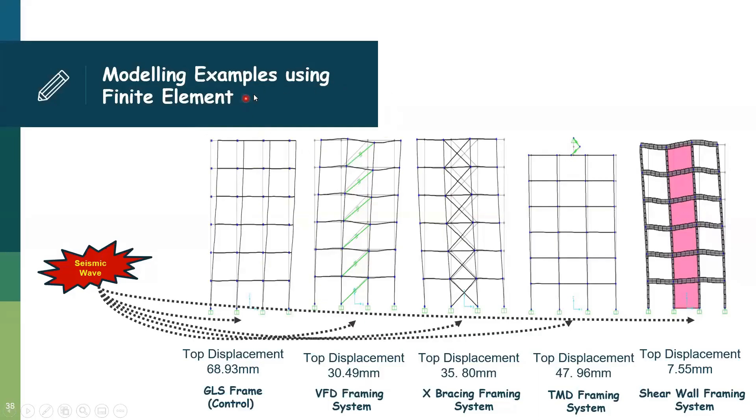Here's some modeling examples using finite element. We have the earthquake movement. We have the RC frame without any innovations. We have a damper. We have a bracing. We have a tuned mass damper. We have a shear wall. The displacement is reducing from 6 to 8 to 7 mm. So the structure is improved.